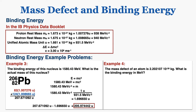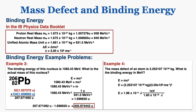Example four: the mass defect of an atom is 2.202107 times 10 to the negative 28 kilograms — what is the binding energy in mega electron volts? To find the energy in joules I multiply the mass by the speed of light squared. Then I convert to electron volts using a factor label, and then to mega electron volts using another factor label. The result is the binding energy of that atom in mega electron volts.